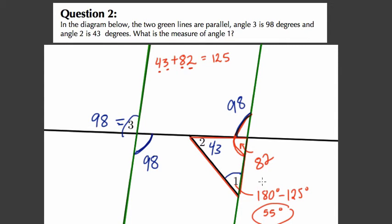So we're able to find angle 1 by using vertical angles, alternate interior angles, supplementary angles, and then finally the angle measure of a triangle. Classical. Thanks.